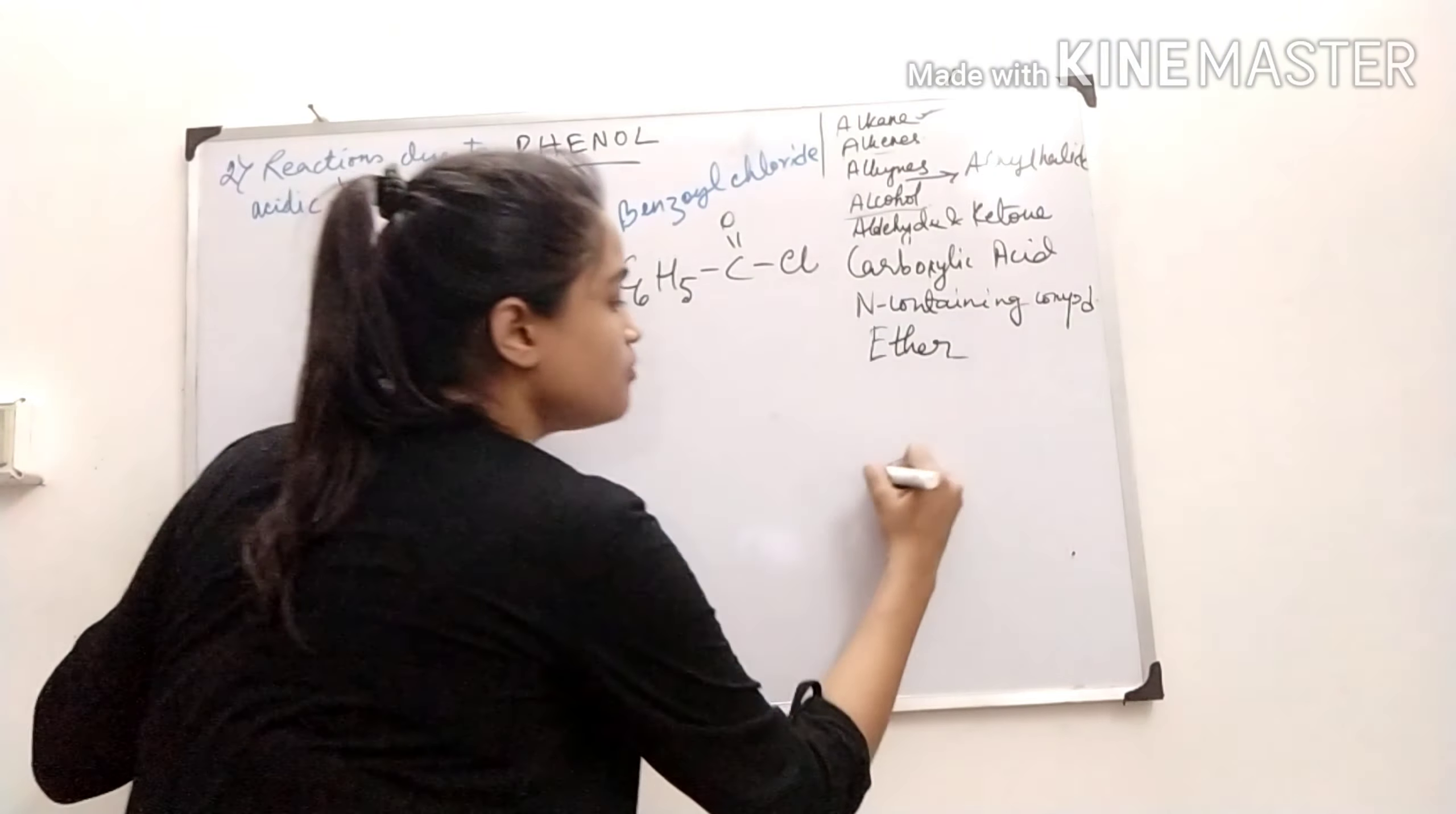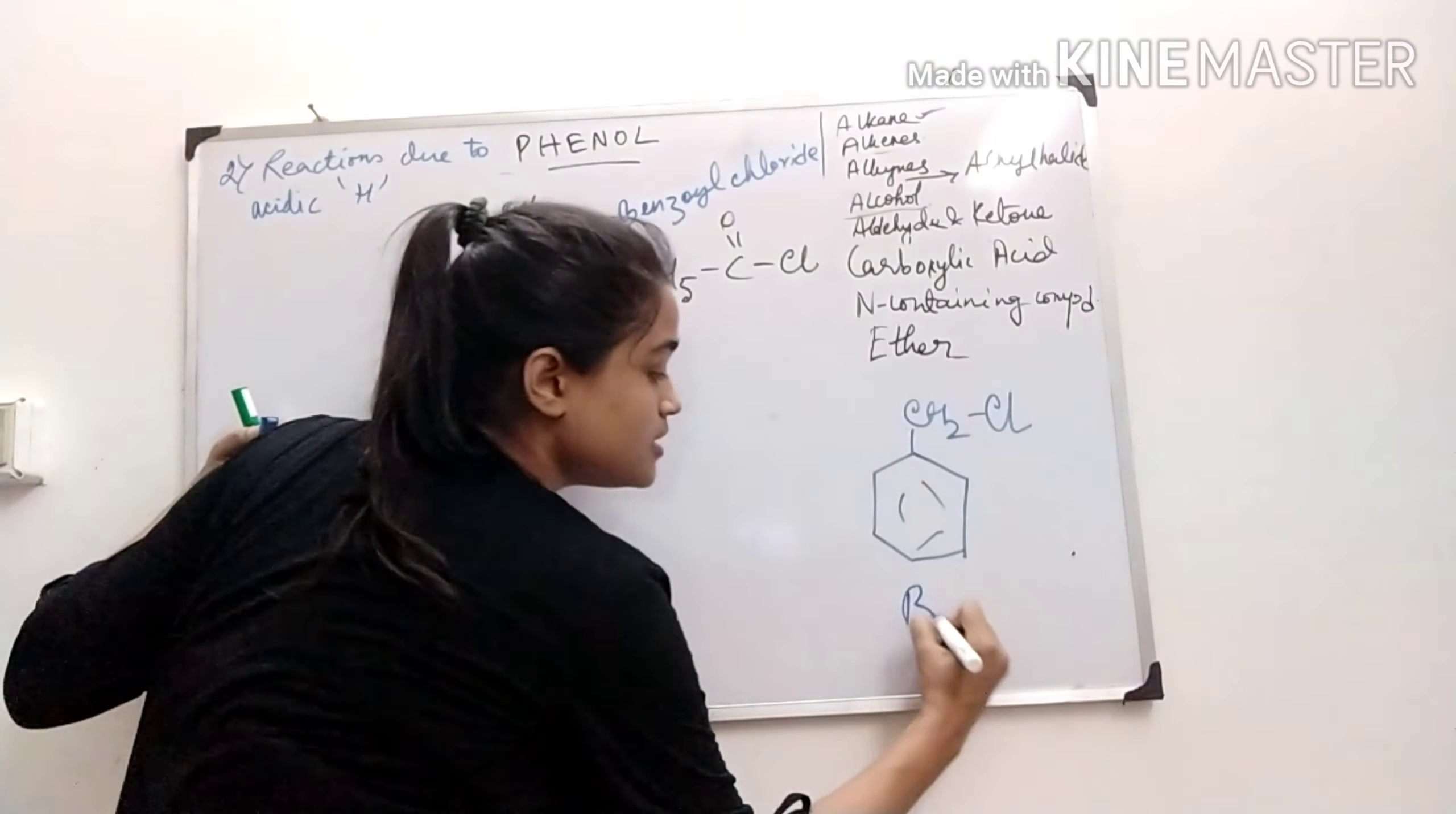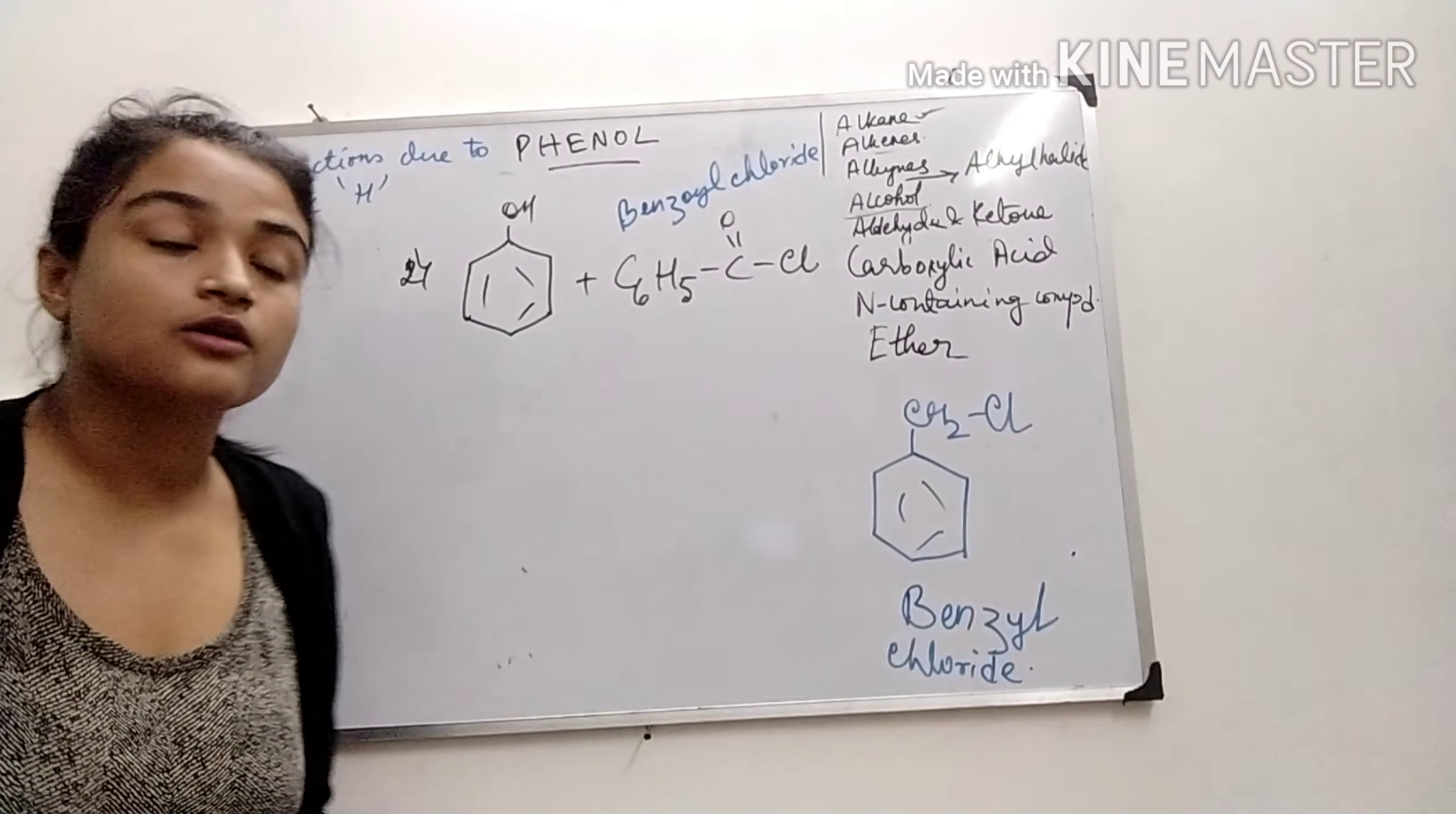One more thing: if it is C6H5CH2Cl, that is benzyl chloride, not benzoyl chloride. With C double bond O and Cl, C6H5COCl, that is benzoyl chloride.